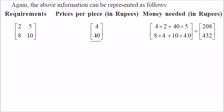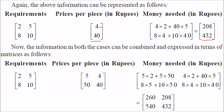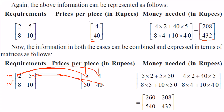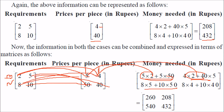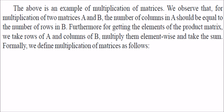This information can be represented in matrix form with four and forty replacing the previous prices. If you want to combine both price scenarios, for Meera you compute two into five plus five into fifty, and two into four plus five into forty. For Nadeem: eight into five plus ten into fifty, and eight into four plus ten into forty. This combined example is the example of matrix multiplication.